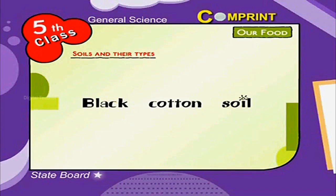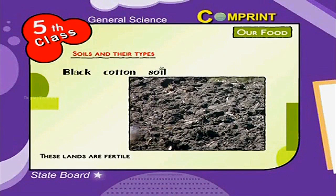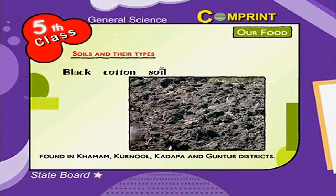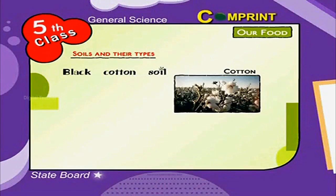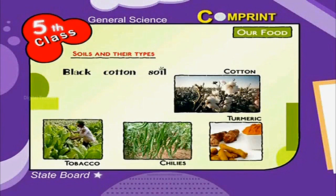Black Cotton Soil is black in colour and can store more water. These lands are fertile. Found in Kurnool, Kadapa and Guntur districts. Crops like Cotton, Chillies, Tobacco and Turmeric are grown here.